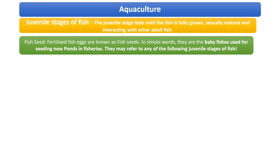Before we begin further, let us have a look at some of the terms we shall encounter while going through the fisheries chapter. First, we shall talk about the juvenile stages of fish. The entire juvenile stage lasts until the moment the fish becomes sexually mature. Once the fish attains sexual maturity, it can be known as an adult fish. There are various stages through which the fish goes through.